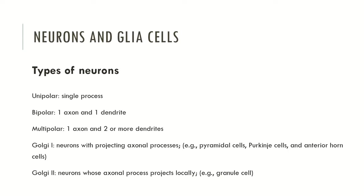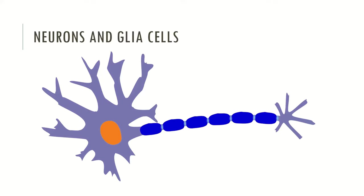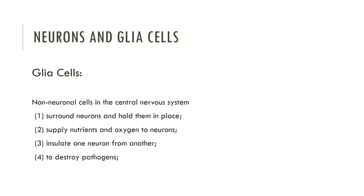Now let's look at a figure showing the three major areas of the neuron — the dendrites, the cell body, and the elongated axon structure through which the action potential is propagated. Glial cells are non-neuronal cells in the central nervous system with several functions: they surround and hold neurons in place, supply nutrients and oxygen to neurons, insulate neurons from each other, and destroy pathogens.